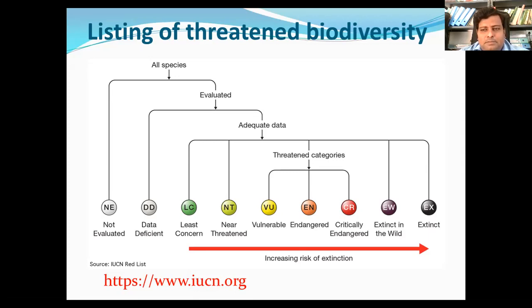Endangered, designated EN, is also a criteria under threatened species. This designation is applied to species that possess a very high risk of extinction as a result of a rapid population decline of 50% to more than 70% over the previous 10 years. The current population size for endangered species is fewer than 250 individuals, among other factors.